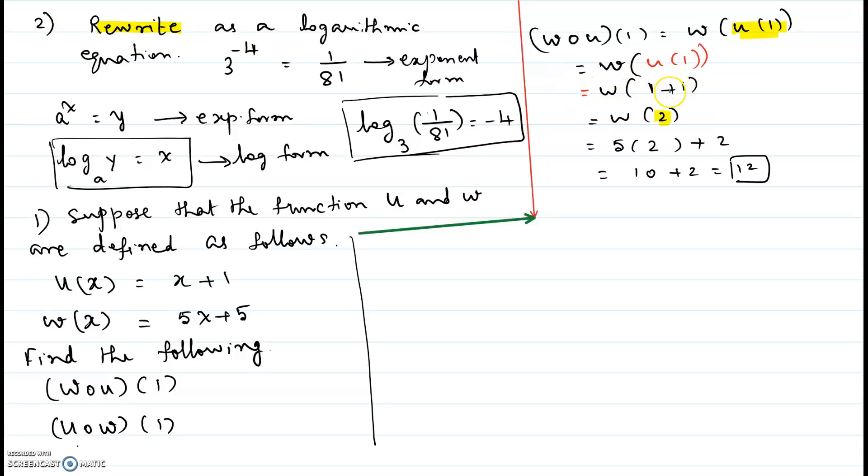So we get w at 1 plus 1 or w at 2 which becomes 5 times 2 plus 5. Because the equation of w is given as 5x plus 5. So you have to change the input x as 2.